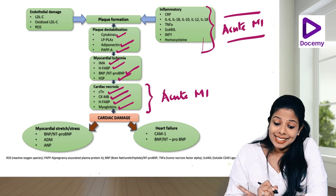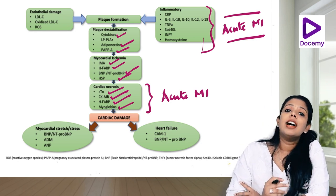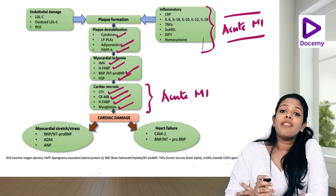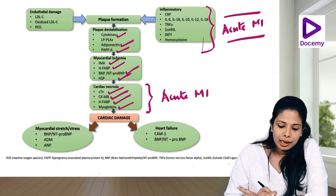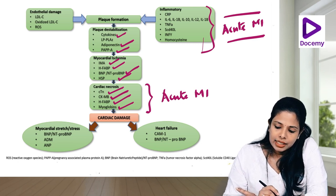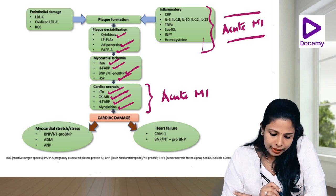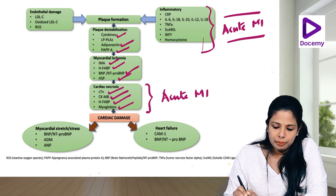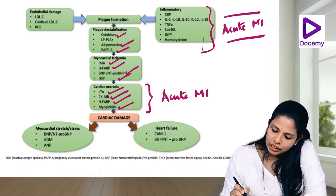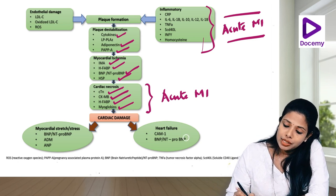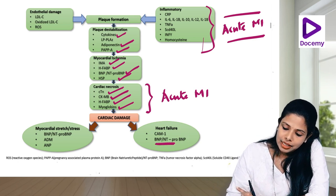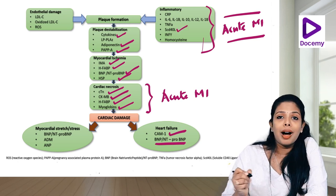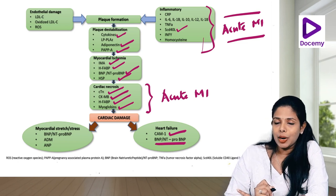We have the myocardial stretch markers: in case of hemodynamic stress from volume overload or pressure overload, we have the natriuretic peptides — BNPs, ANPs, NT-proBNP, and also adrenomedullin (ADM). In case of heart failure, apart from BNP and NT-proBNP, we also have CAM (cell adhesion molecule). CAM and soluble CD40 ligands are newer markers being used for myocardial ischemia.